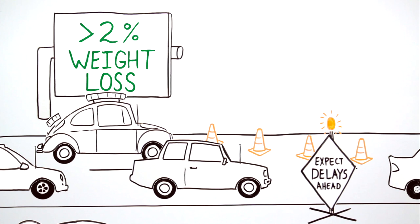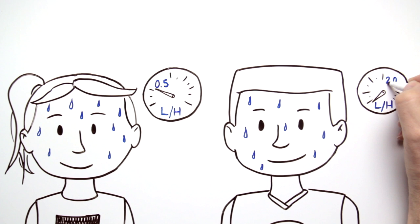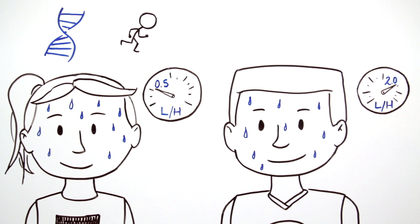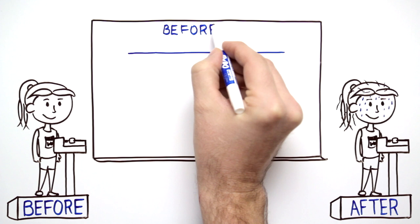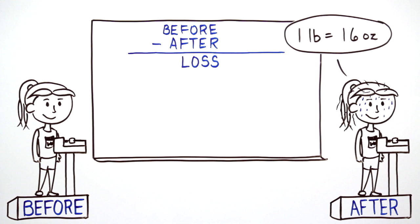The sweating rate of athletes varies widely, typically ranging from between 1.5 to 2 liters of fluid per hour. Factors like genetics, exercise intensity, and environmental conditions like temperature, wind, and humidity can have a big impact on individual sweating rates. Comparing an athlete's weight before and after exercise is the simplest way to estimate fluid loss.